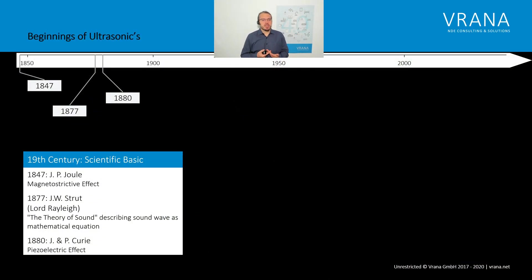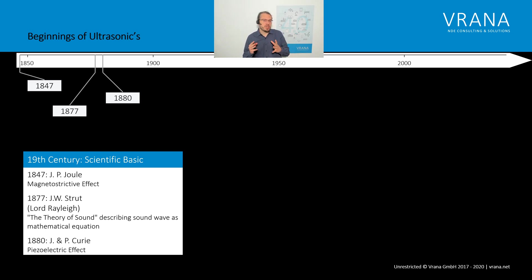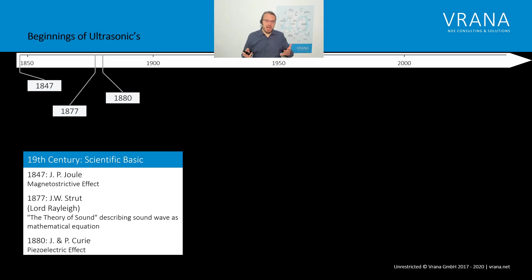If you look into the beginnings of ultrasonics, you quickly see that there are two inventions which are really important for ultrasound: the magnetostrictive effect and the piezoelectric effect, because both of them actually allow us to produce transducers — all the probes we currently use. That's the basics for it. Also, around the same time frame, Lord Rayleigh wrote a book about the theory of sound, and this was the first time that somebody described a sound wave as a mathematical equation. This is also very foundational for ultrasonics.